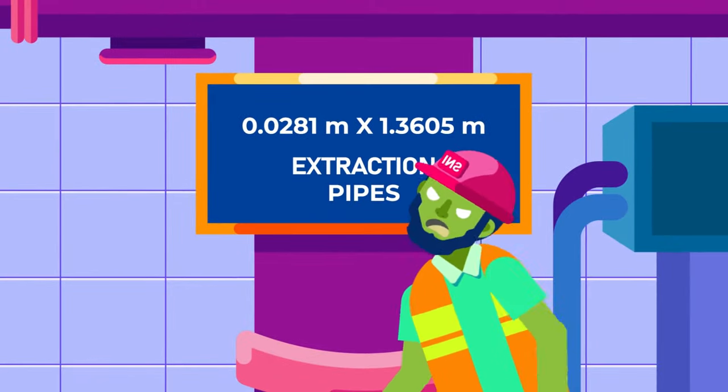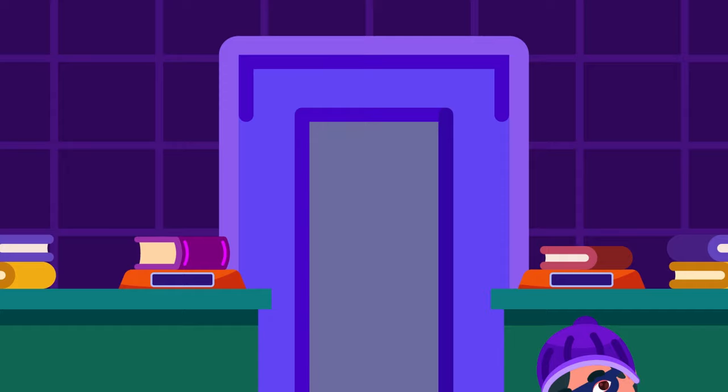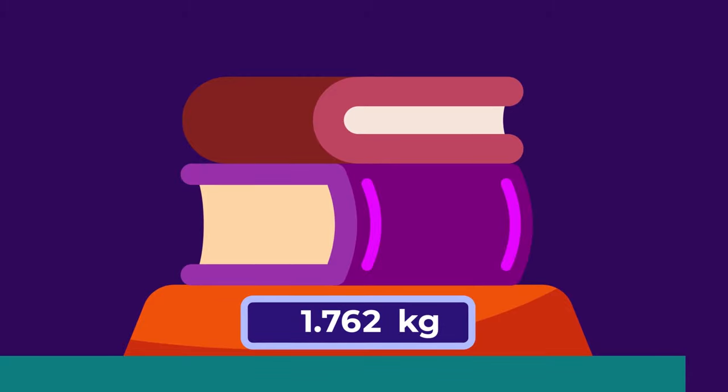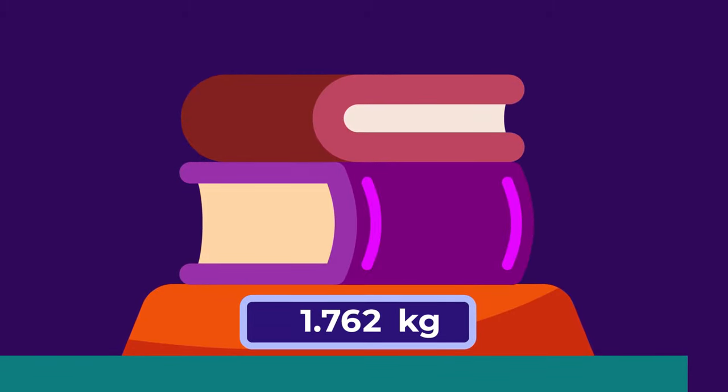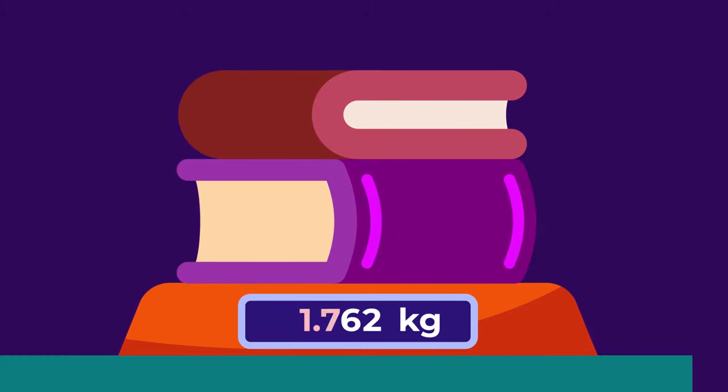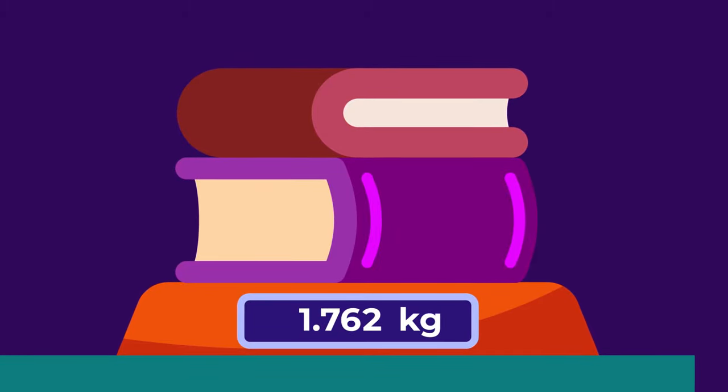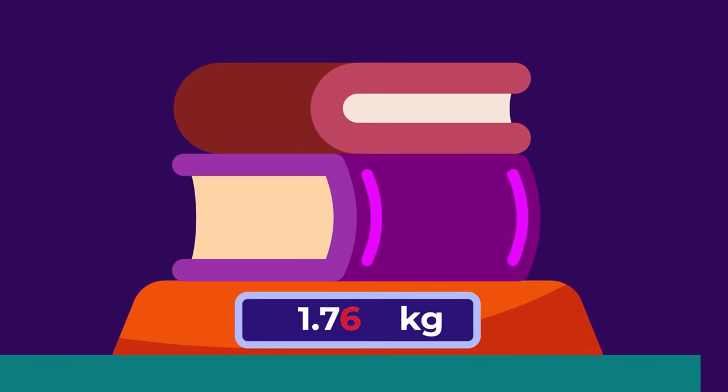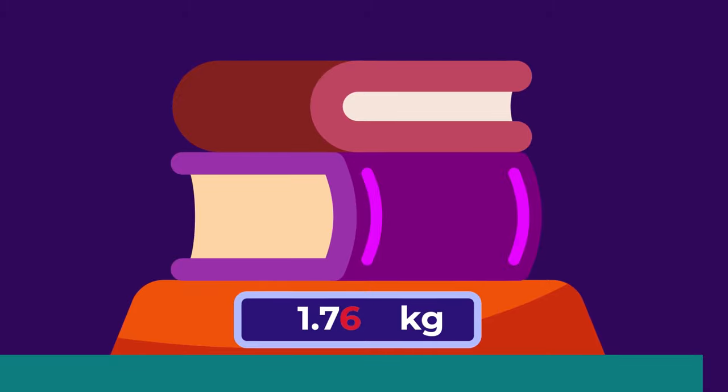Up until now, you've come across the number rounding twice. Here are some steps you can follow to correctly round a number. First, determine the last significant digit of the number. Remember the total mass of the books which needs to be rounded to two significant figures? The last significant digit of 1.762 kilograms thus is in the place of 7. The number right after 7 is the number we need to round and pay attention to.